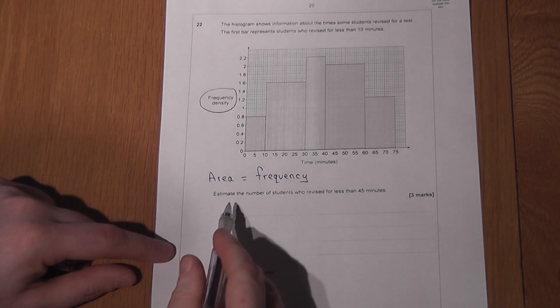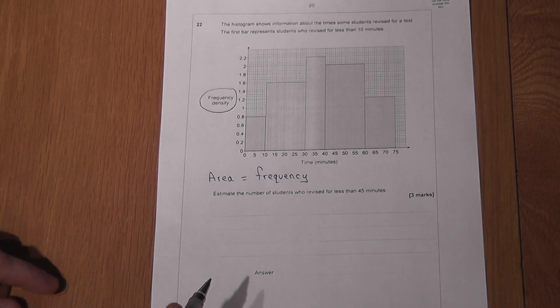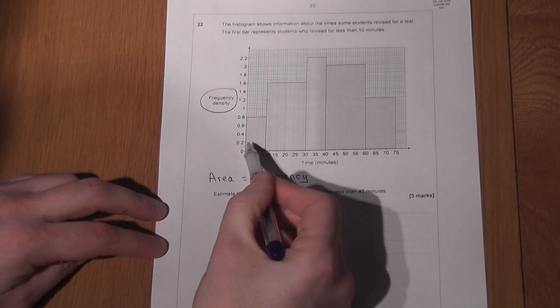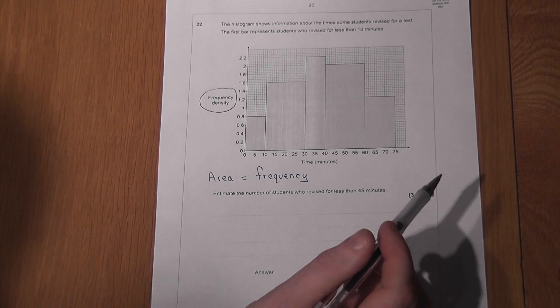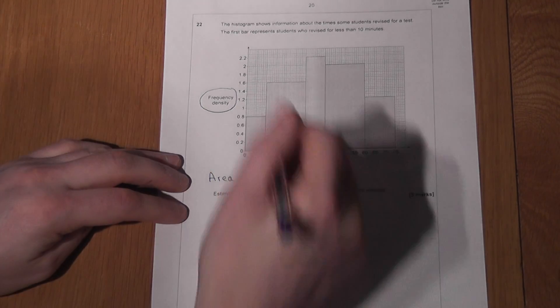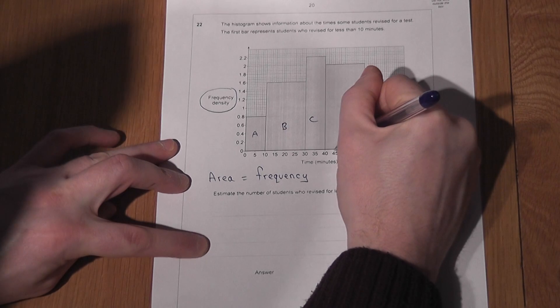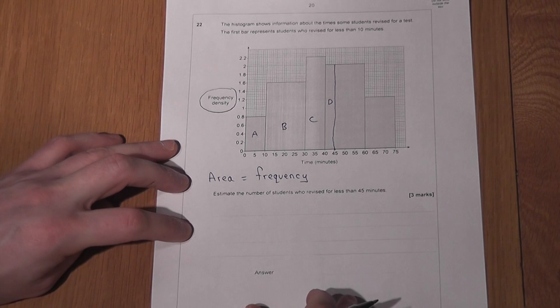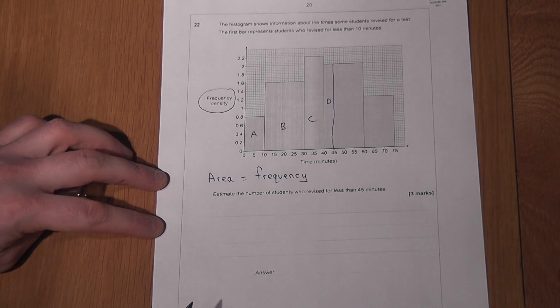We're asked to find or estimate the number of people who revised for less than 45 minutes. So I've got to find the area of this graph up to 45 minutes by doing 1, 2, 3, and here's 45. A quick little sketch of four different area calculations. Now area is quite basic work, really quite a low skill, but we're applying it within a harder context.